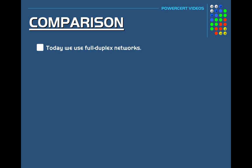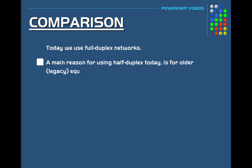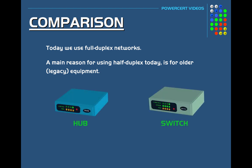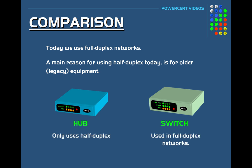Today we use full duplex networks. A main reason why you would see a half duplex network today is for older legacy equipment that can only operate in half duplex mode — for example, if a network is still using hubs instead of switches. Hubs can only operate in half duplex mode, which is a main reason why hubs are obsolete today and you can't even buy them anymore.